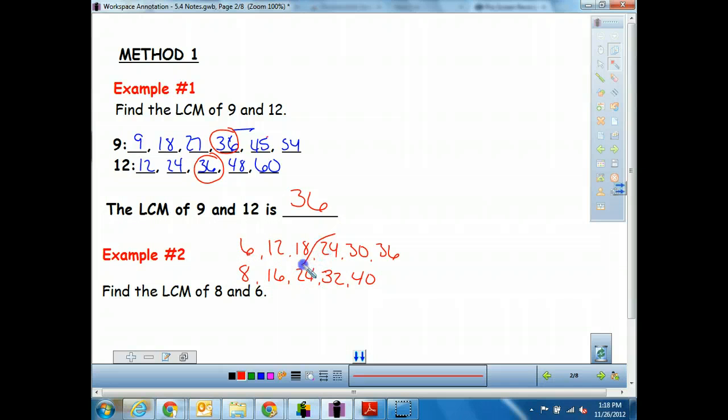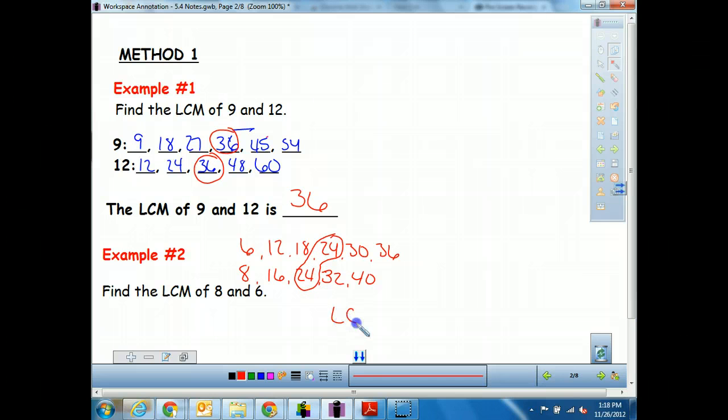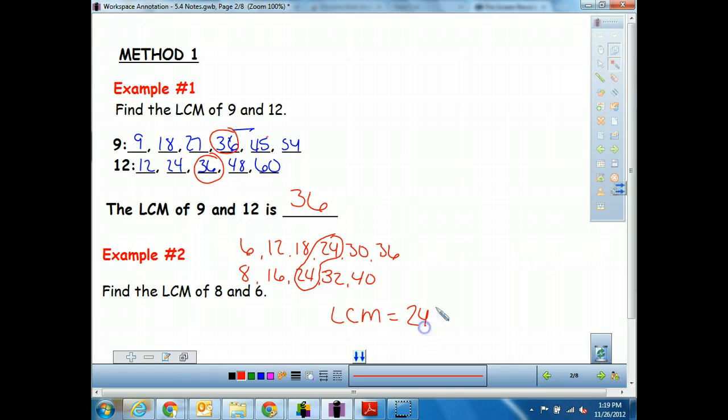Ooh, look at right here. Both of those are the same. So my LCM, my least common multiple between 6 and 8, happens to be 24.